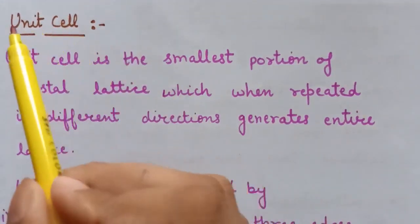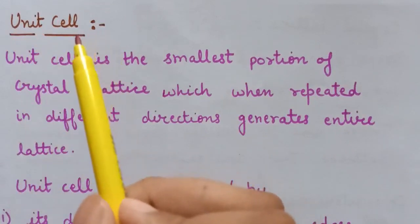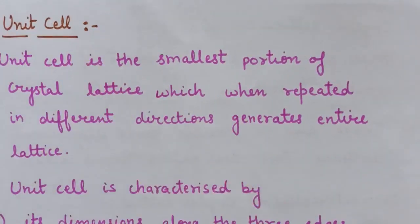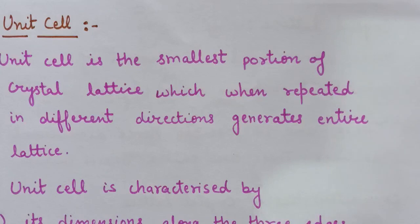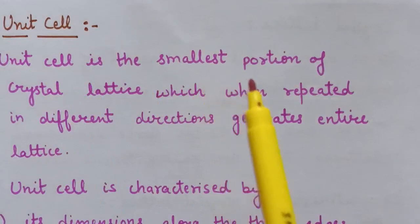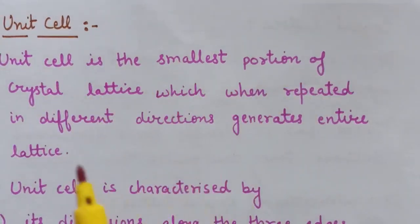For understanding the term 'unit cell', consider the example of a room. A room is made up of bricks — a regular and repeating pattern of bricks results in the formation of a room. So, for a room, the brick is the smallest and repeating unit, and we can call the brick a unit cell for the room. Unit cell is the smallest portion of the crystal lattice which, when repeated in different directions, generates the entire lattice.